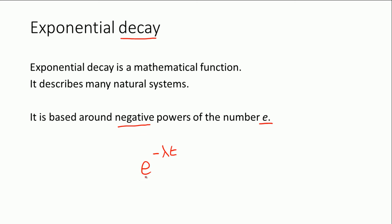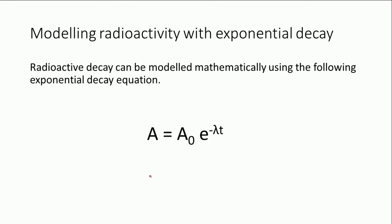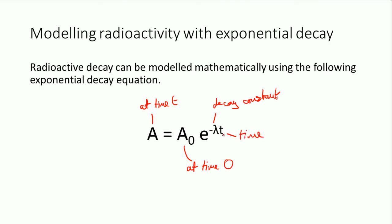This is our exponential decay equation for radioactivity. Here we've got A, which is the activity at time t, and A-naught, which is the activity initially at time zero. Here is our exponential factor: e is the exponential function, lambda is the decay constant, and t is the time — notice it's not the half-life, it's a general t. Because of the nature of radioactive decay, you can also substitute N for number of undecayed nuclei, or R for count rate, so this works as N equals N-naught e to the minus lambda t, or R equals R-naught e to the minus lambda t.